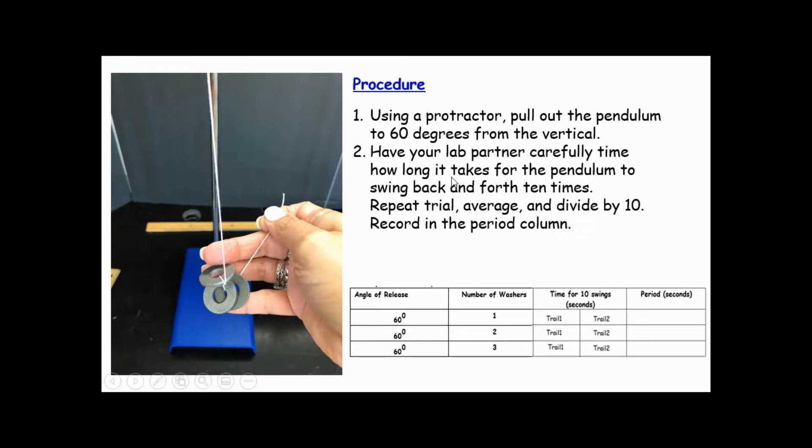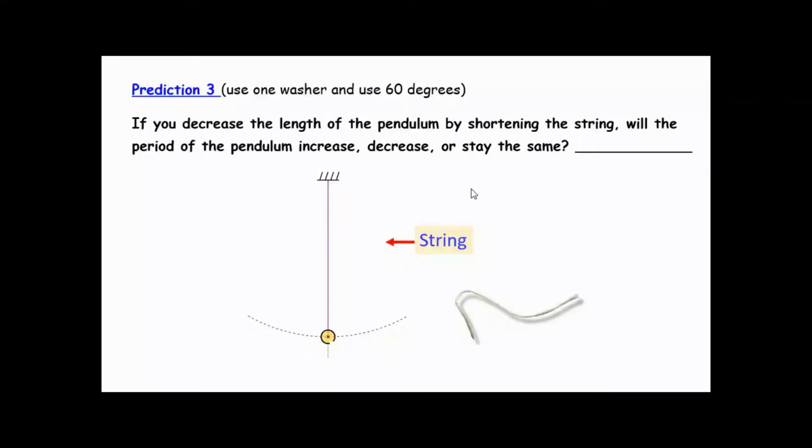Then, have your lab partner carefully time how long it takes for the pendulum to swing back and forth 10 times. Repeat the trial, average them by adding and dividing by 2, and then divide the result by 10. Repeat the same procedure for 2 and then 3 washers.